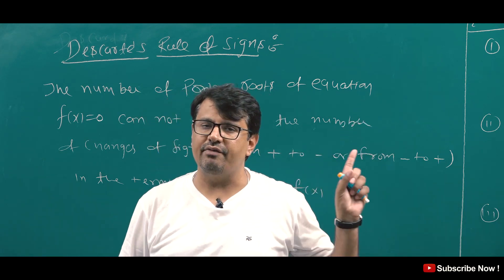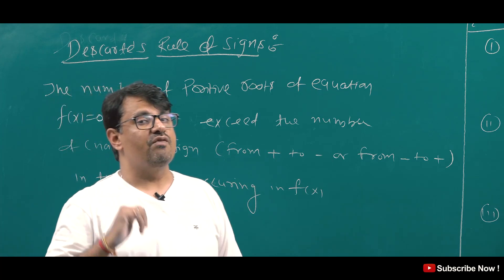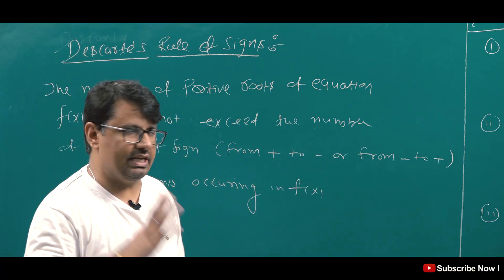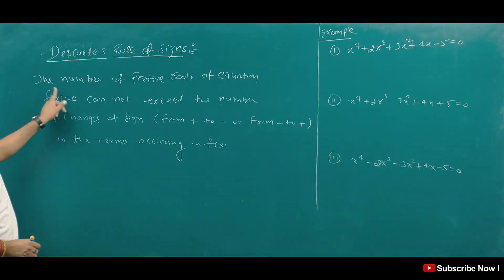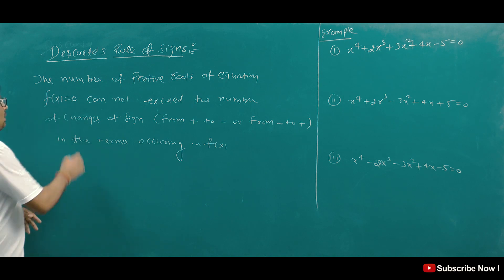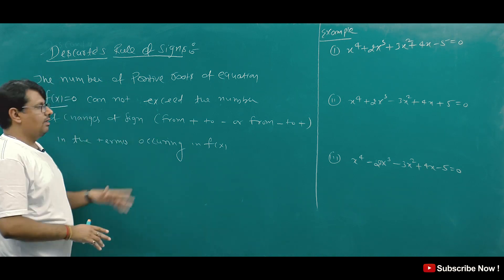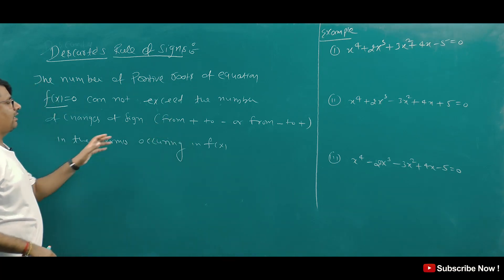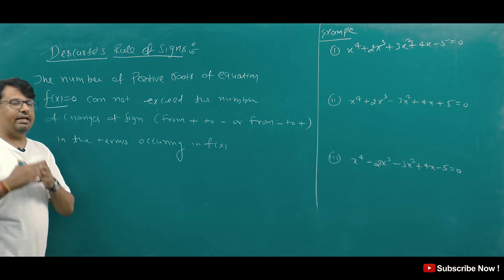Go to my previous videos — I have done a lot of videos on the Theory of Equations. So what is the Descartes' Rule of Signs? The number of positive roots of equation F(x) = 0 cannot exceed the number of changes of sign, from plus to minus or minus to plus, in the terms occurring in F(x).